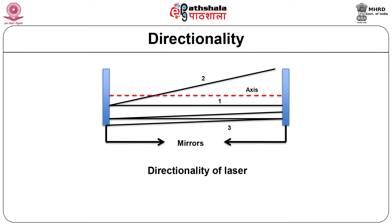Directionality is the direct consequence of placing the active medium between two parallel mirrors. Due to the mirror arrangement, photons travelling along the axis or slightly deviated will be able to bounce back in the cavity. Photons moving away from the axis of the resonator will be rejected by the cavity. As shown in the figure, ray 1 travels along the axis and is sustained in the cavity; ray 2 is not reflected from the mirror and is rejected; and ray 3 has little deviation from the axis but is sustained due to multiple reflections through the mirrors.